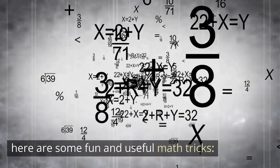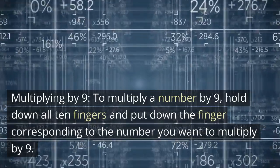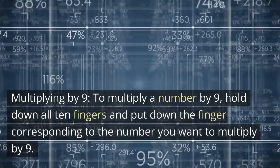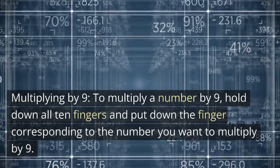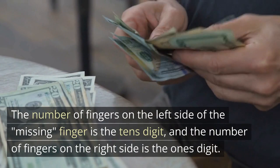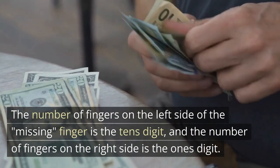Here are some fun and useful math tricks. Multiplying by 9: To multiply a number by 9, hold down all 10 fingers and put down the finger corresponding to the number you want to multiply by 9. The number of fingers on the left side of the finger is the tens digit, and the number of fingers on the right side is the ones digit.